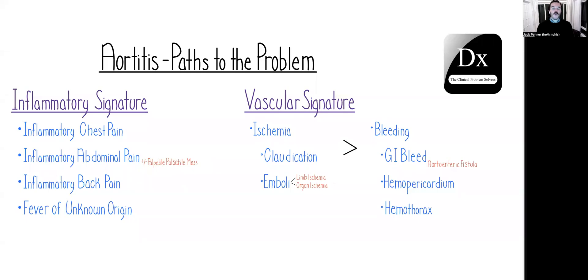Pulling up the schema one more time as we close out today — what I really want to drive home is that we always follow a path to a specific problem space in any case we reason through. The possible signatures that lead us to the problem space of aortitis primarily relate to the pathophysiology of inflammation of a big vessel. The inflammatory signature includes generalized systemic inflammation and localizing symptoms along the course of the aorta through the chest, abdomen, and retroperitoneum — with pain in the chest, abdomen, and back. In addition, we may see direct vascular complications including ischemia and less commonly bleeding.